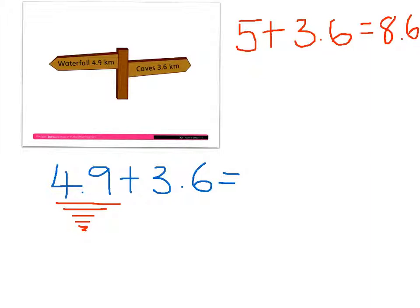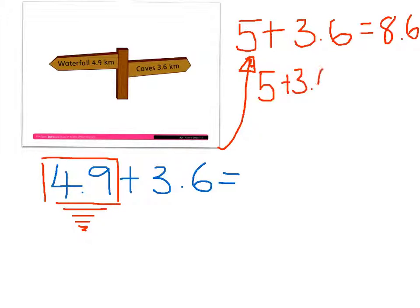But before, I had to do something to 4.9 to make it into 5, and that was I had to add 0.1 on. So now I'm going to take that 0.1 off. So I'm going to go 5 plus 3.6, take away 0.1, and that equals 8.5.